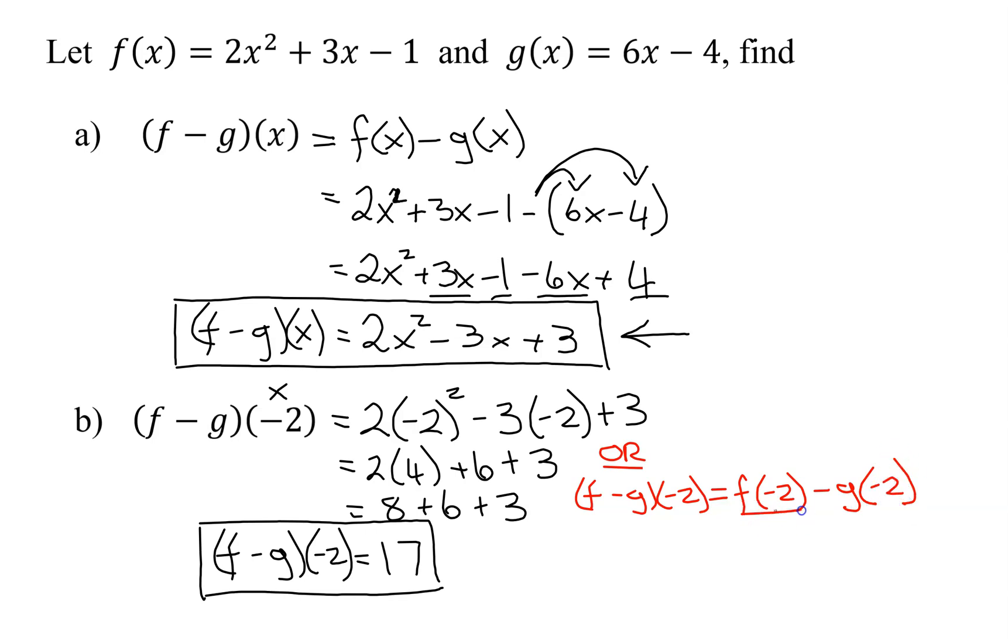And I could have figured out f(-2) by plugging in a -2 into the function f here, here and here. Then you'd figure out g(-2) by plugging a -2 into here and here, and then you'd subtract the two answers. But the reason I picked the method I did is we'd already figured out the definition of (f - g)(x). So it was simpler just to plug -2 into the answer to part a.